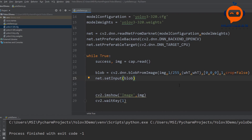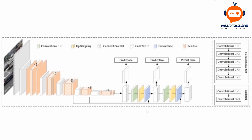Now that we have set our input, we need to understand what we require as output. Looking at the YOLOv3 architecture, we have many convolutional layers and three different outputs: prediction 1, prediction 2, and prediction 3. This means three different output values will come from our network. To reference these output layers, we need to know their names.